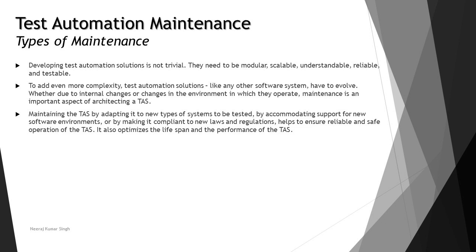To add even more complexity, test automation solutions, like any other software system, have to evolve from time to time, just like a regression test suite. As we take updates in the SUT, the regression test suite must also update accordingly. Maintaining the tasks by adapting to the new system under test, accommodating support for new software environments, or making it compliant with new laws and regulations helps ensure reliable and safe operation.